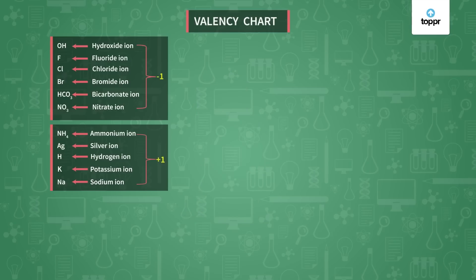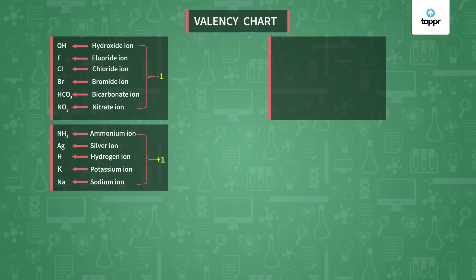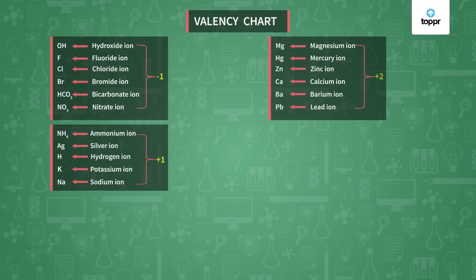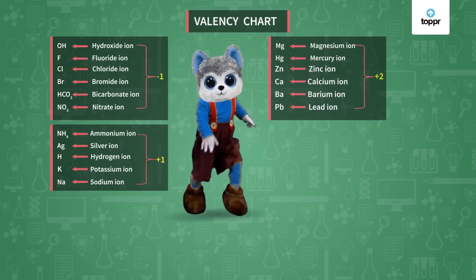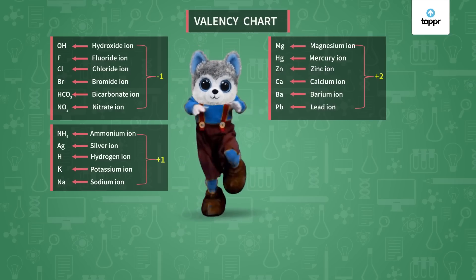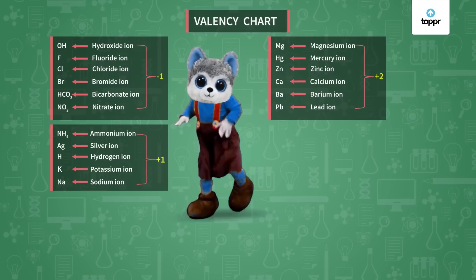Now let's go to the next group. The next group has magnesium, mercury, zinc, calcium, barium, and lead. The entire group has valency plus 2. The song goes: Magnesium, mercury, zinc, calcium, barium, lead — magnesium, mercury, zinc, calcium, barium, lead — their valency is 2.